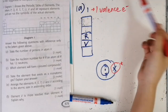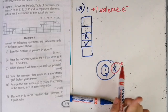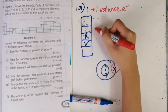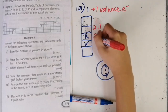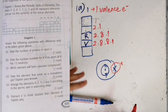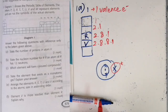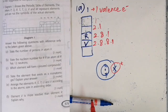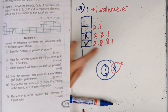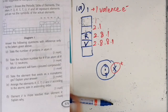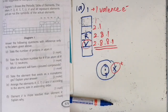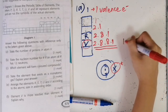For elements in group one, they have only one valence electron. So the first element would be 1, the second element would be 2,1, the third element would be 2,8,1, and the fourth element would be 2,8,8,1. As you progress down, you just add 8 and then 18. So for atom V, the number of protons would be 2+8+8+8+1, which gives 19. The answer is 19.